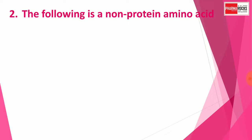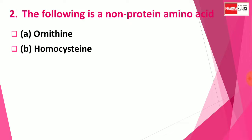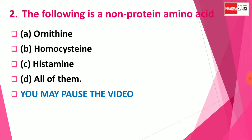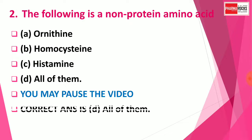Question number 2: The following is a non-protein amino acid. Option A: Ornithine, Option B: Homocysteine, Option C: Histamine, Option D: All of them. You may pause the video for thinking about the answer. The right answer is Option D: All of the above. Ornithine, Homocysteine, and Histamine are all non-protein amino acids.